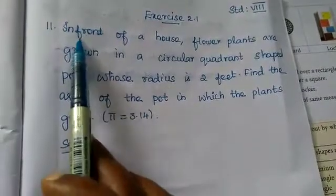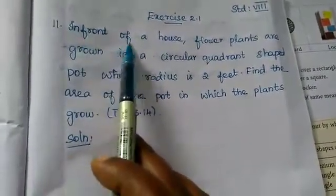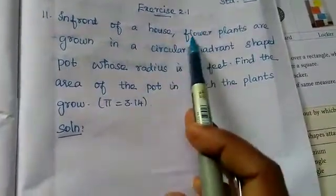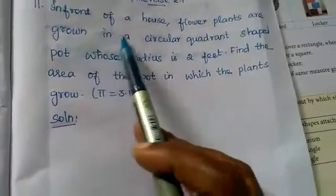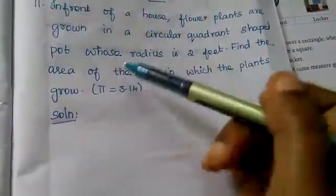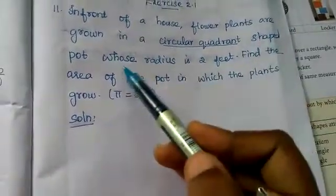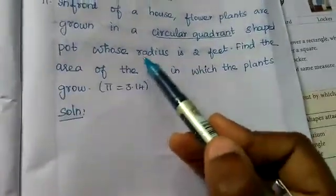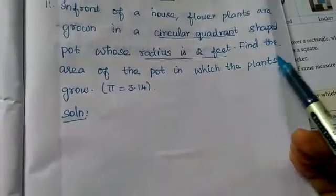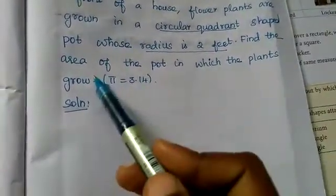Now listen. What is the given question? In front of a house, flower plants are grown in a circular quadrant shaped pot whose radius is 2 feet. Find the area of the pot in which the plants grow.